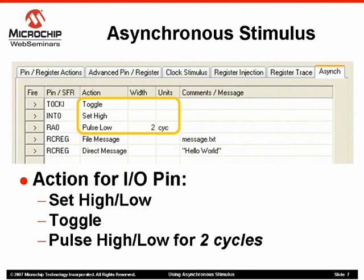When pulse low or high is selected, the system will fill in one cycle as the default. After all the elements of the stimulus are defined, press the tab key or use the mouse to click in the comment field, and the arrow symbol will appear. Optionally, enter your comments to describe what this stimulus is for. This comment will show in the output window when it is being fired. In the case above, when the user clicks the fire button of the first row, T0 clock input will toggle its state. Likewise, IN0 will become high regardless of what it was previously. For RA0, after the fire button was clicked, if it was high, it will become low for two cycles, then go back to high. On the other hand, if it was low, then nothing will happen.